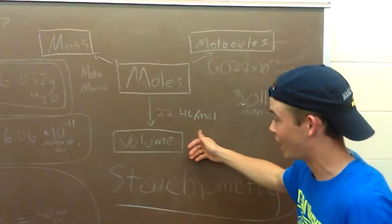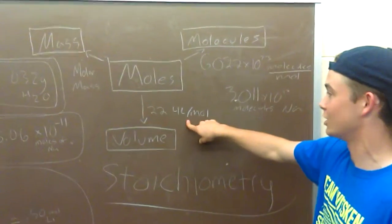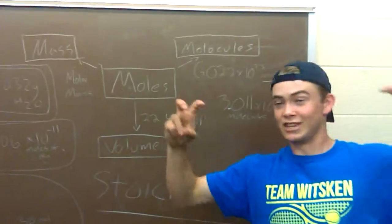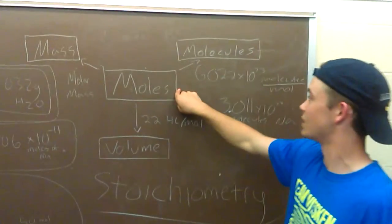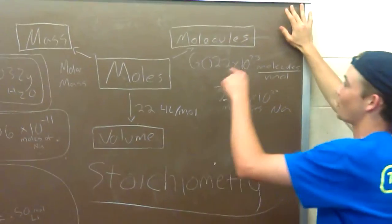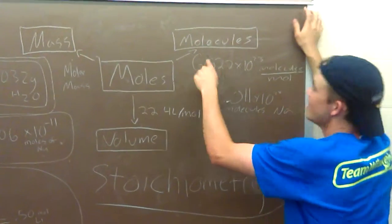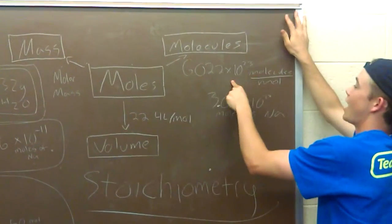Say you're given volume in the reaction. All you have to do to get back to moles is divide by 22.4 liters per mole, which is STP, and you'll get your moles. And then if you have moles of substance and you want to get to the amount of molecules used, all you have to do is multiply by Avogadro's number 6.022 times 10 to the 23rd.